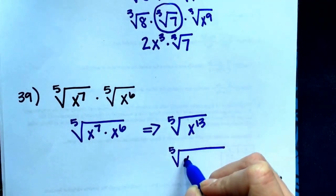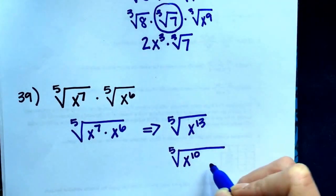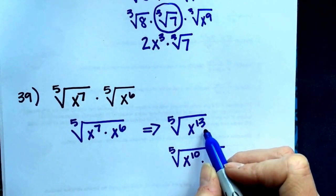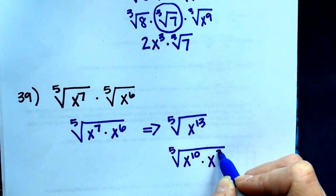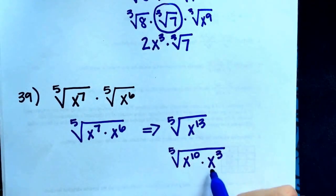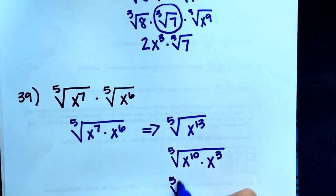The biggest number divisible by 5 would be 10. How many more are there that were x to the 13th? Here's 10 of them, I need three more. So I can split these, if you want to write them separately, we can split these up.